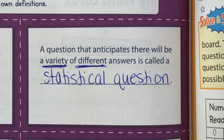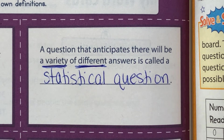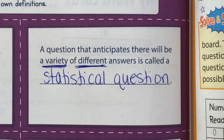Variety means that there are many answers — a lot of them. And 'different' means they're not all the same. There are a lot of answers and they're all different for the most part. That's what a statistical question is.